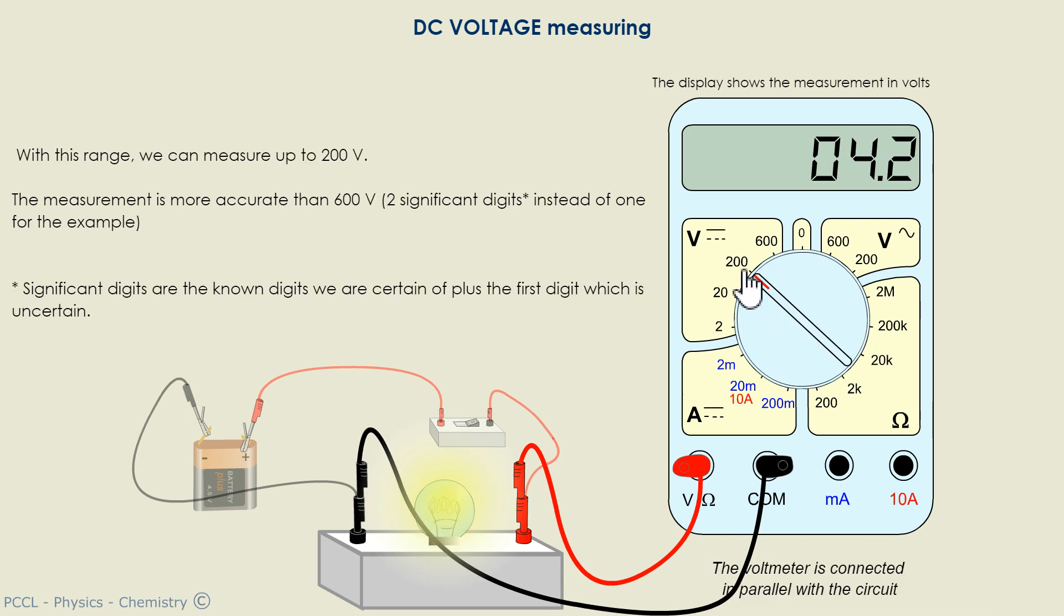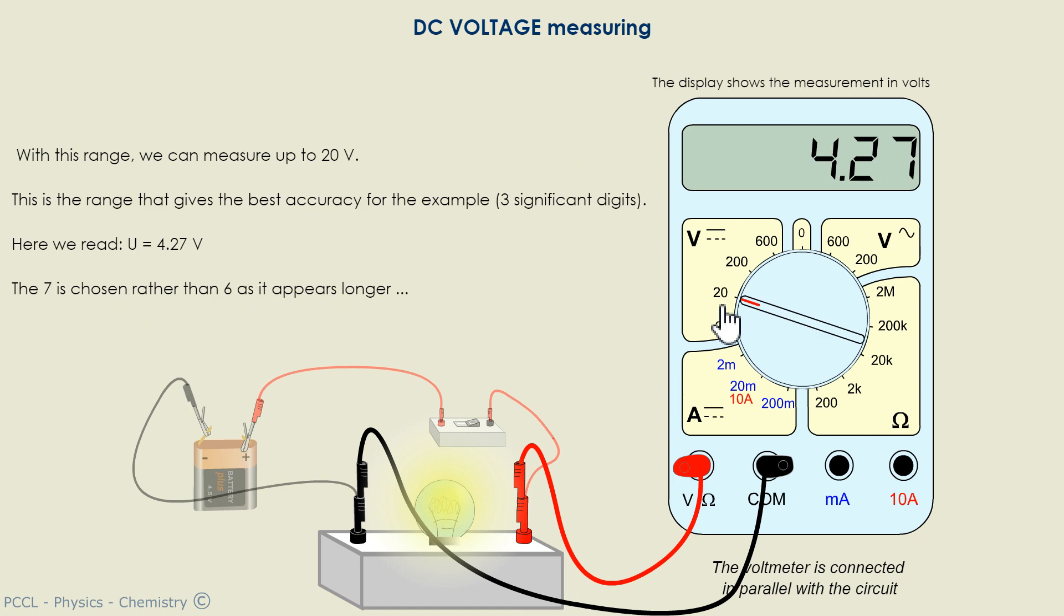I specify 200 volts because the ranges have a unit. We don't say the 200 range, we say the 200 volts range, which measures up to 200 volts. We can even go to 20 volts, since we can measure with this range up to 20 volts. So we can read 4.27.